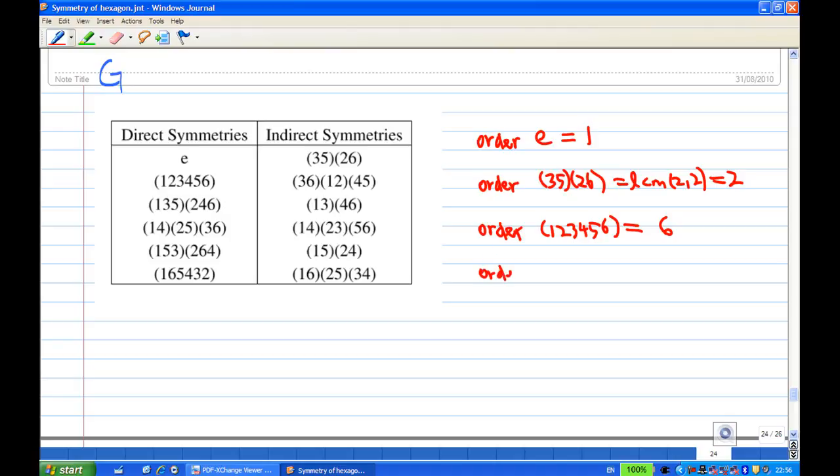And then you can look at the order of (3,6)(1,2)(4,5). This one is LCM of 2, 2, 2, which is also 2. The least common multiple of 2 is 2. And let's try another one, the order of (1,3,5)(2,4,6). In this case, it's LCM of, each of them is a 3-cycle. (1,3,5) is a 3-cycle, (2,4,6) is a 3-cycle. So LCM of 3, 3 is 3.